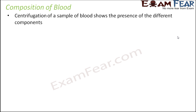How do we know what blood is composed of? To find out, a simple experiment was performed where a sample of blood was taken in a test tube and then centrifugation was performed. Centrifugation means to move an object at a very high speed.